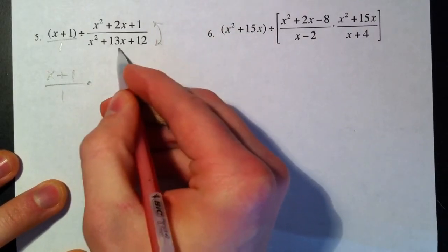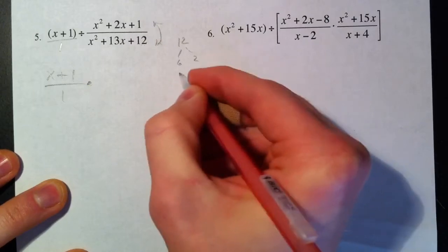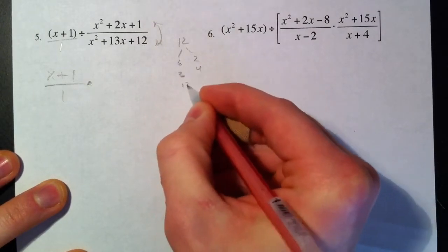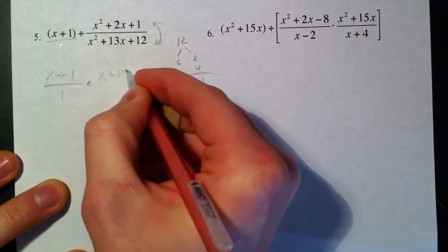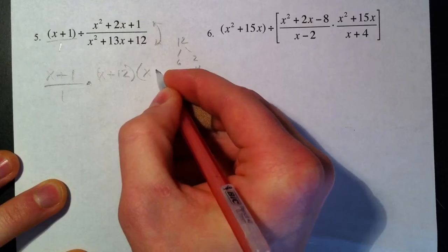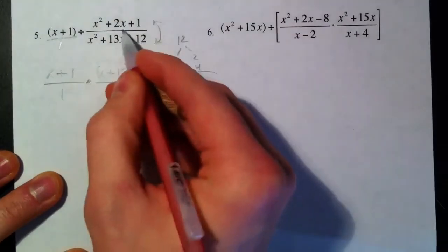What multiplies to 12 and adds to 13? 6 and 2, 3 and 4, 12 and 1: X plus 12, X plus 1. And then on the bottom...